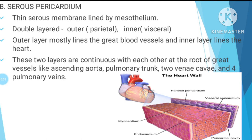Coming to the second layer — the serous pericardium. It is a thin serous membrane lined by mesothelium. The mesothelium cells have the capacity to secrete serous fluid. This layer is a double layer, with an outer parietal layer and an inner visceral layer.